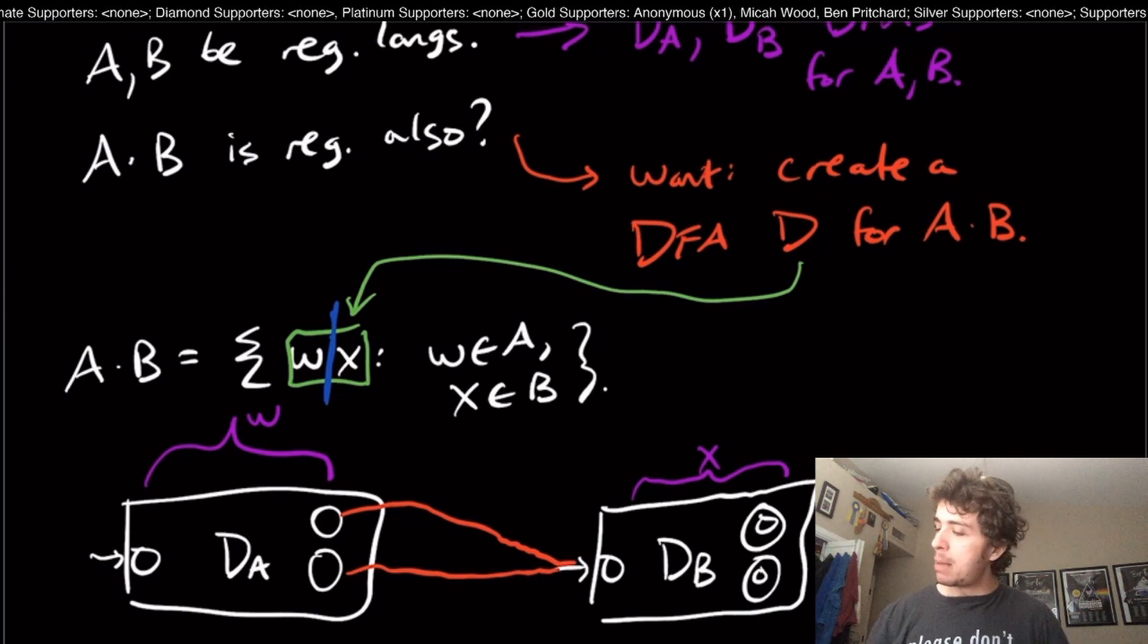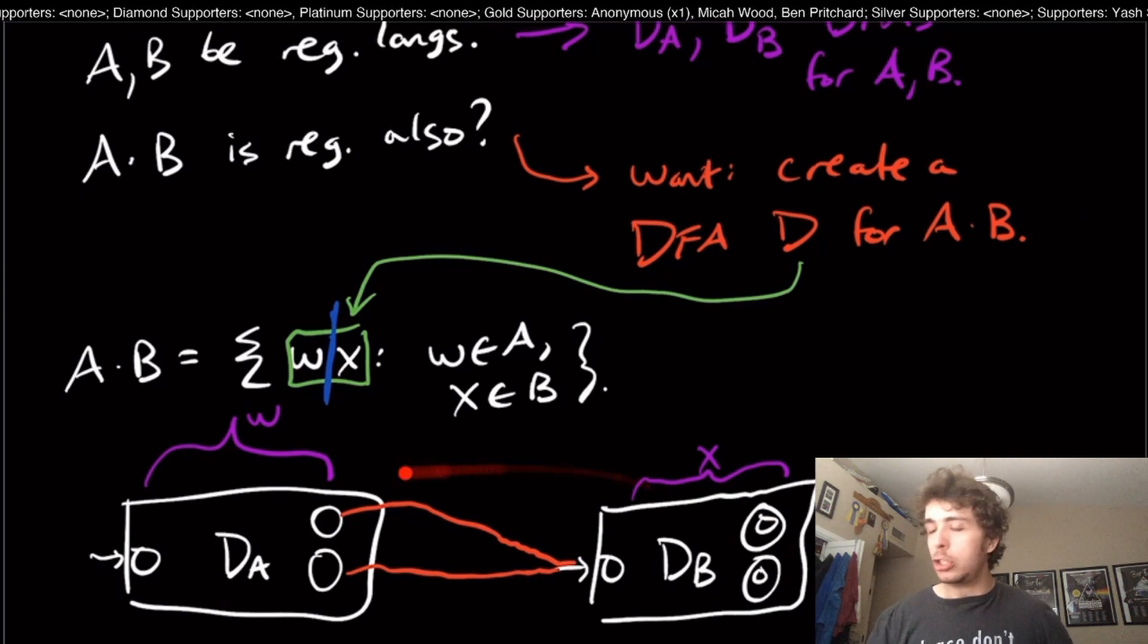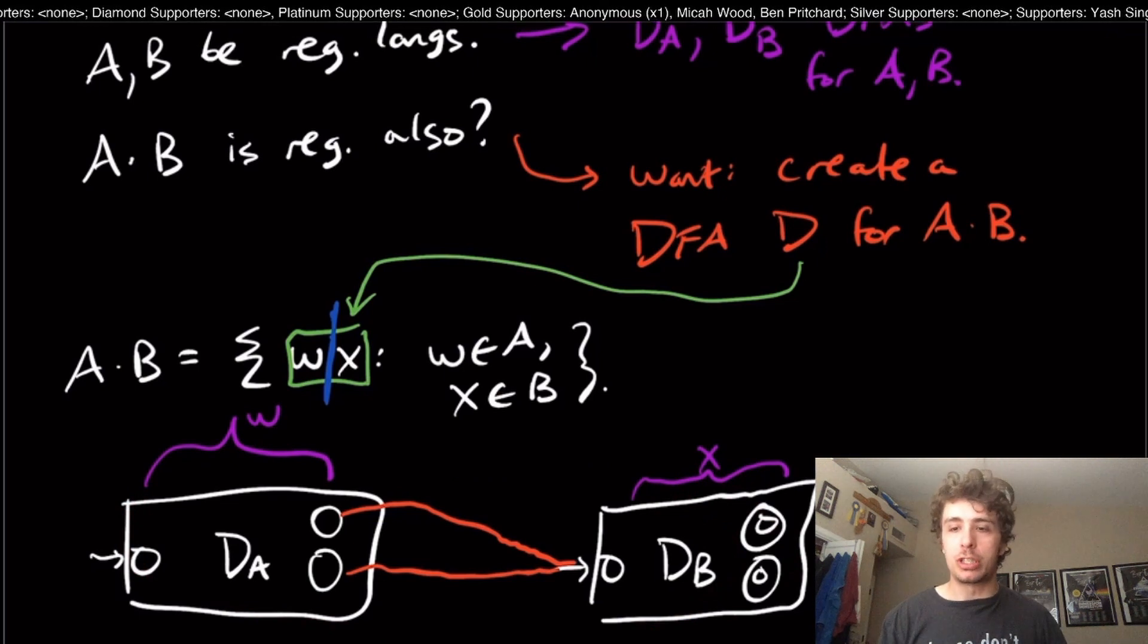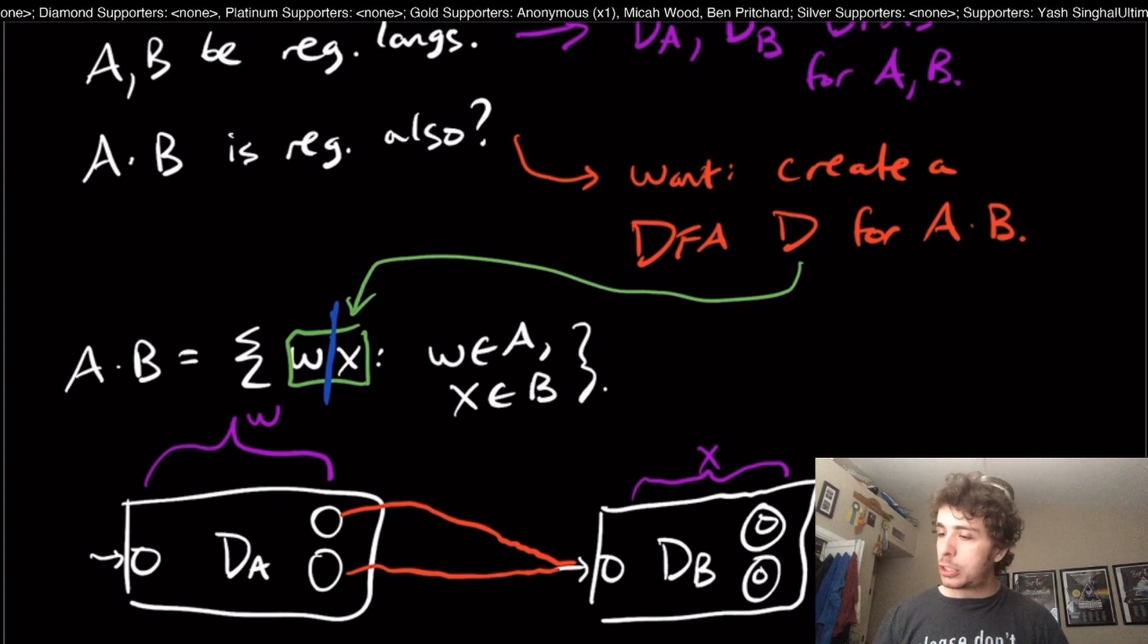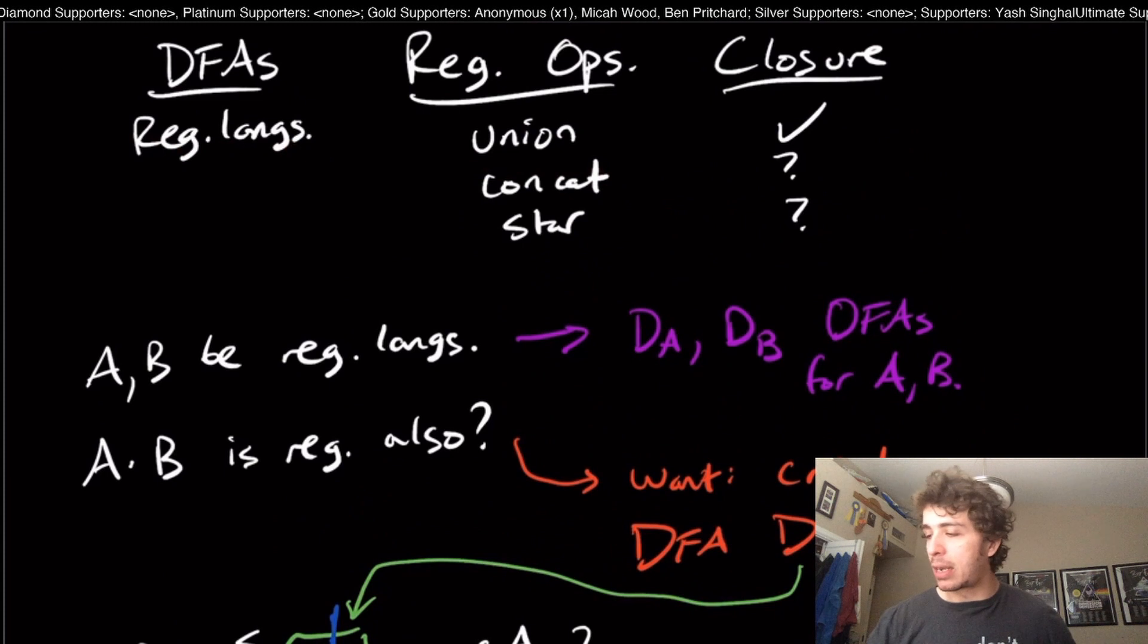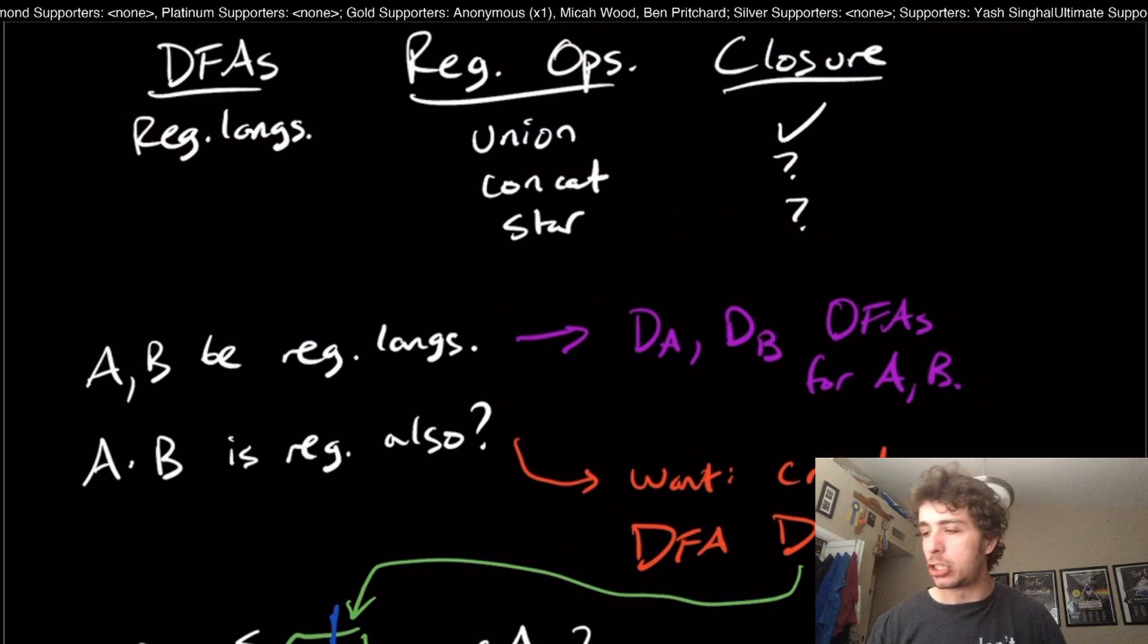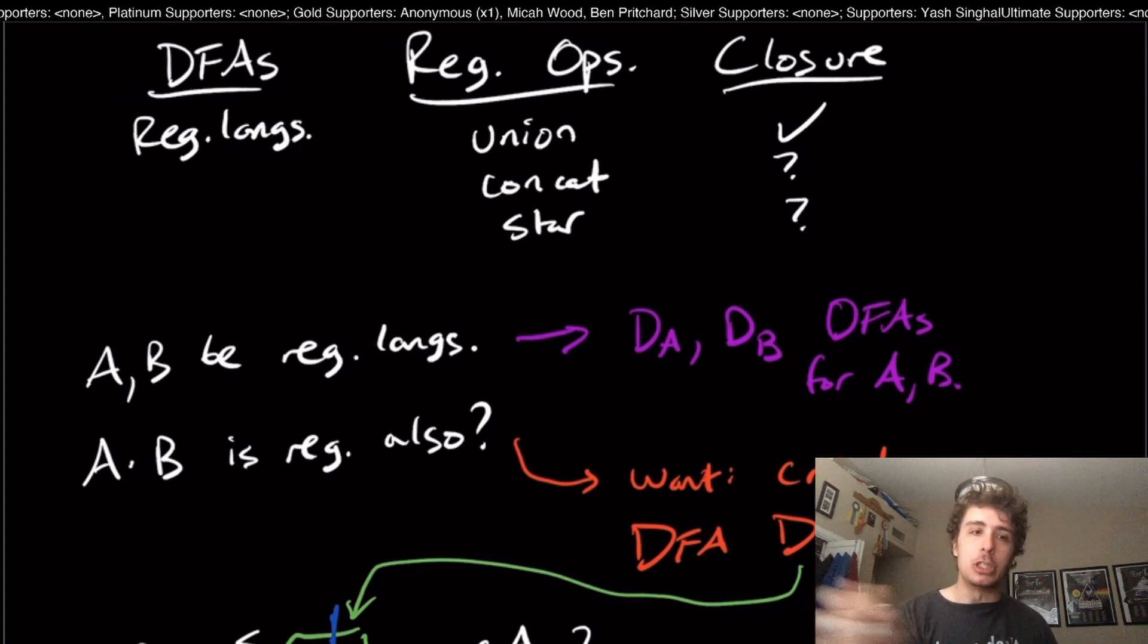We're going to show that eventually, but just because this one approach doesn't work doesn't imply that every other possible approach doesn't work. Those are the main reasons why DFAs are kind of difficult for concatenation.